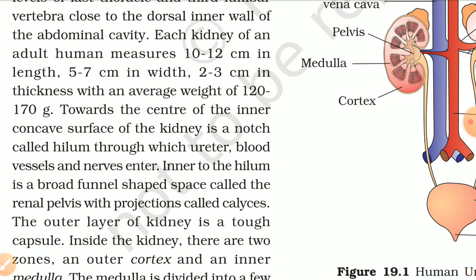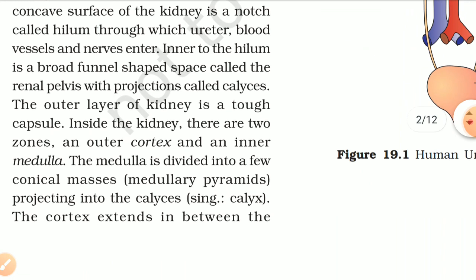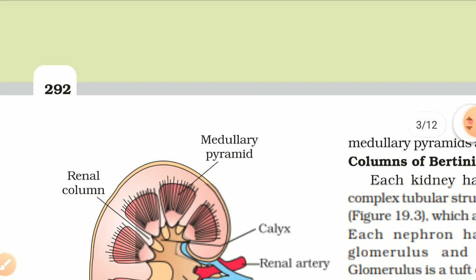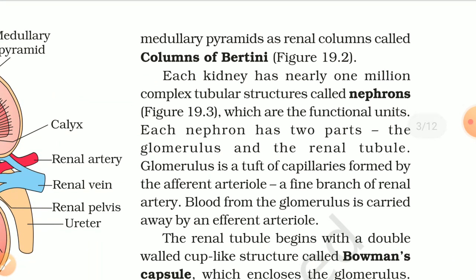Inner to the hilum is a broad funnel-shaped space called the renal pelvis with projections called calyces. The outer layer of the kidney is a tough capsule. Inside the kidney, there are two zones: an outer cortex and an inner medulla. The medulla is divided into a few conical masses called medullary pyramids projecting into the calyces. The cortex extends in between the medullary pyramids as renal columns called columns of Bertin. Each kidney has nearly one million complex tubular structures called nephrons, which are the functional units.